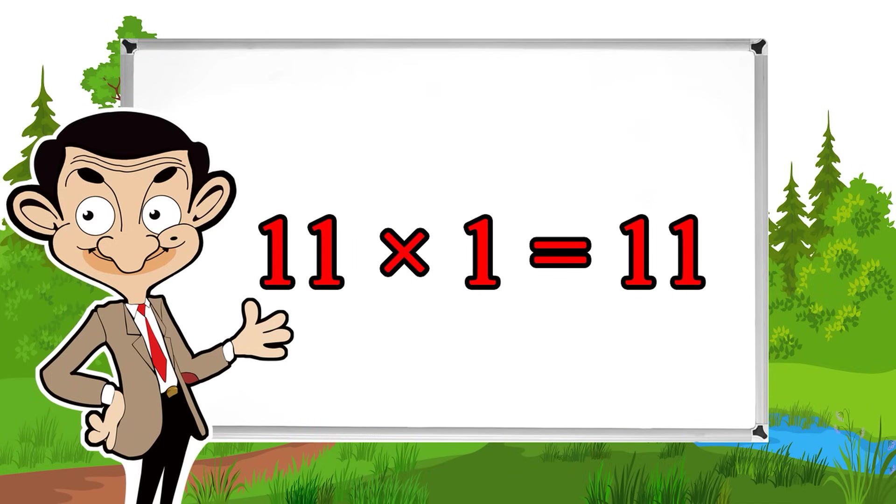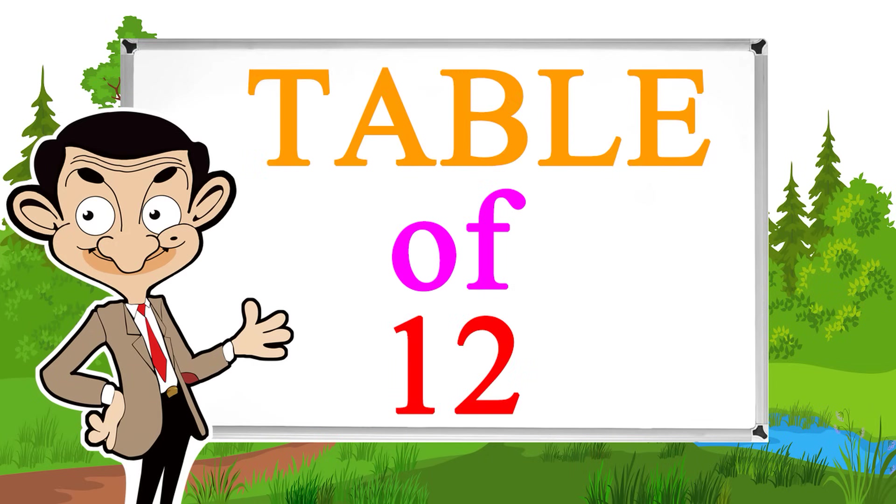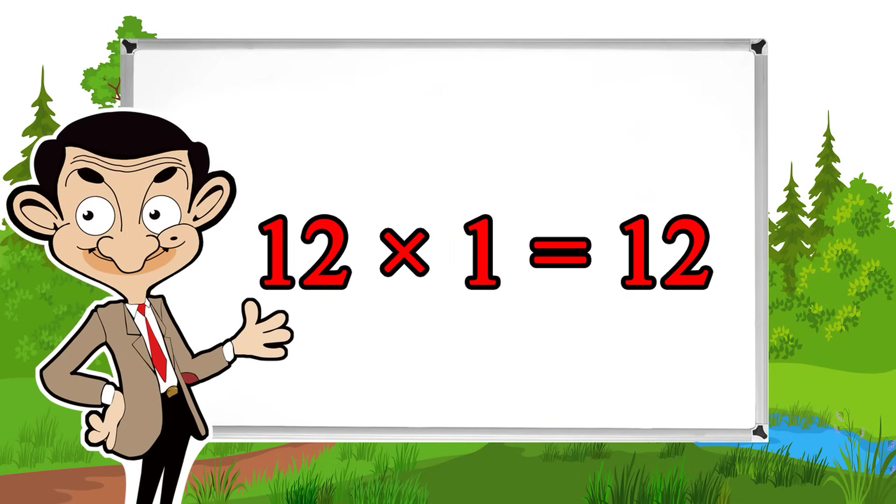11 times 1 equals 11, 11 times 2 equals 22, 11 times 3 equals 33, 11 times 4 equals 44, 11 times 5 equals 55, 11 times 6 equals 66, 11 times 7 equals 77, 11 times 8 equals 88, 11 times 9 equals 99, 11 times 10 equals 110.